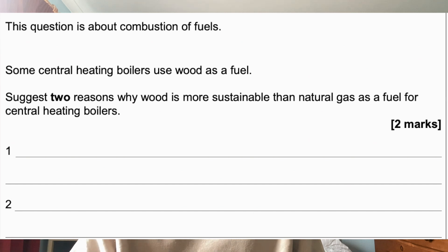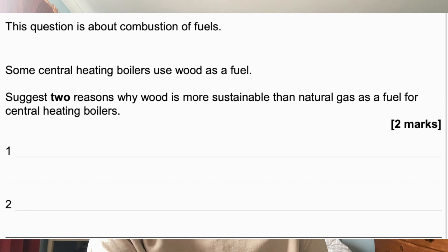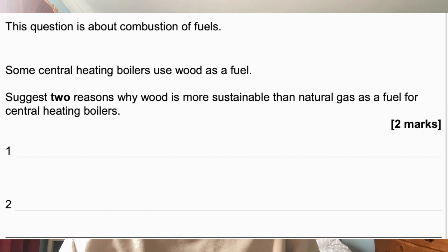Question one is about combustion of fuels: Some central heating boilers use wood as a fuel. Suggest two reasons why wood is more sustainable than natural gas as a fuel for central heating boilers. Pause the video after each question, write your answer, then unpause when you're ready for the next one.